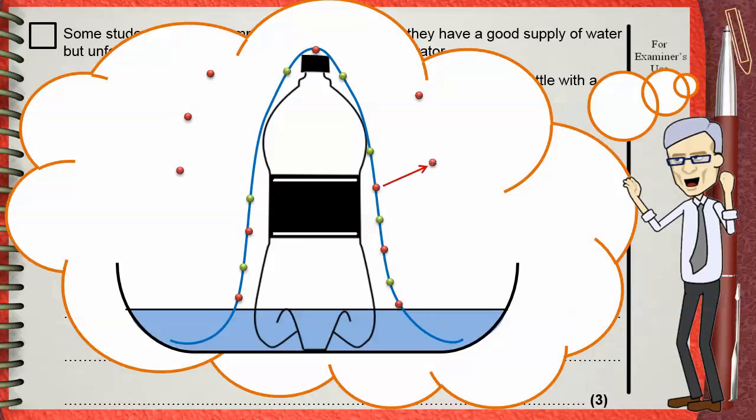As you see, the highly energetic molecules have escaped, leaving behind the least energetic molecules. This will decrease the average kinetic energy of the water molecules on the cloth, so its temperature will decrease.